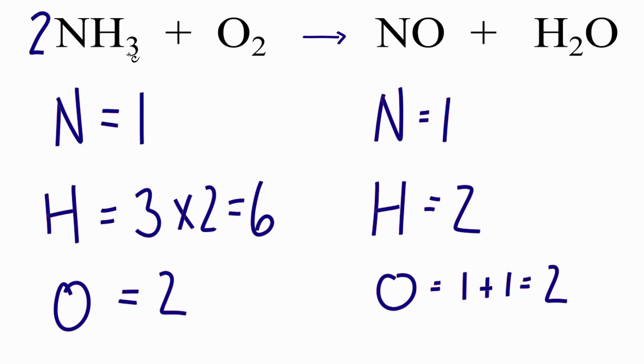So my two times my three hydrogens gives me six. I also have to take and multiply my nitrogens by two. And I have two of those.